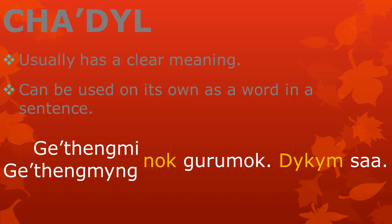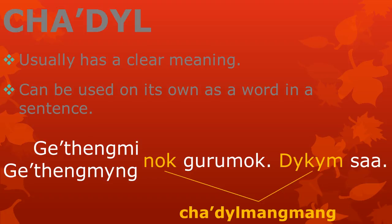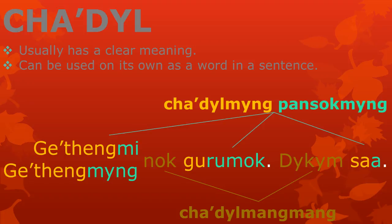Tzadl can be used on their own in a sentence. For example, in the sentences 'getengmeng nokk urumok' and 'dekem sa', the words 'nok' and 'dekem' are only tzadl, without any pansok attached. The other words in the sentences are combinations of tzadl and pansok together.